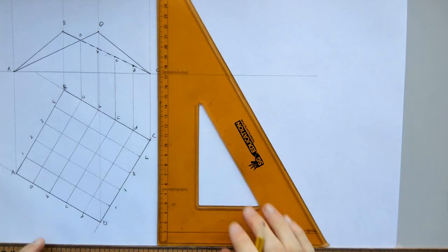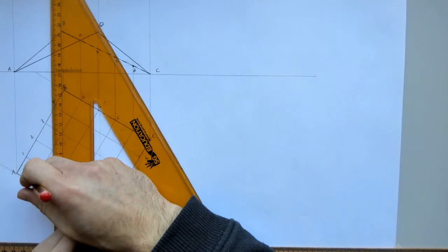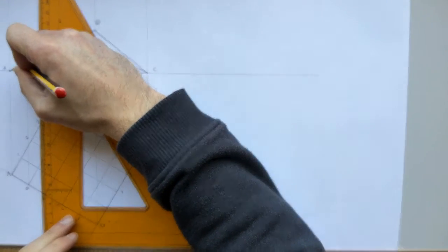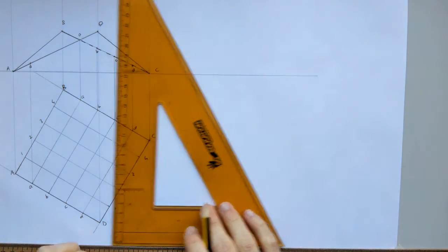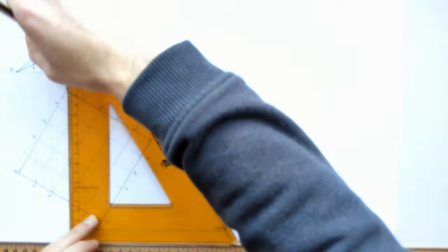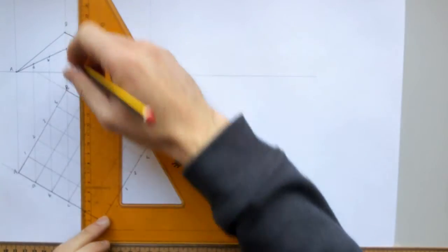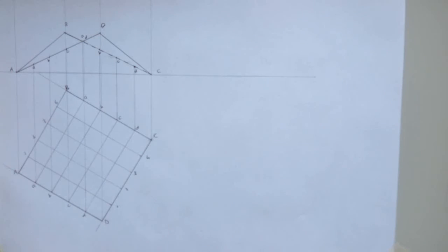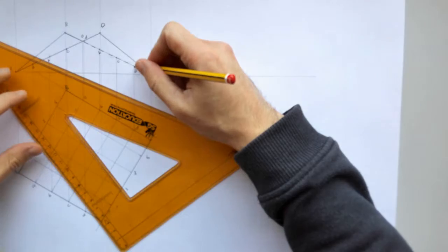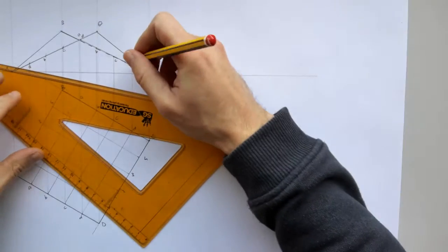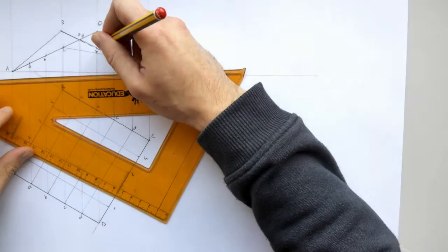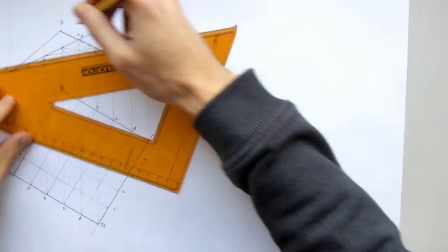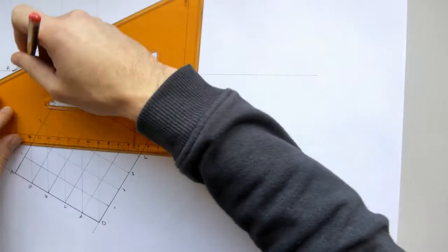So A will connect to A out here on the line AD. A is going to be there. B is going to hit the line there. C will hit it there. And then D hits the line there. And all I have to do now is actually connect the elements together. So D connects to D there. C connects to C. B connects to B. And then A will connect to A there.